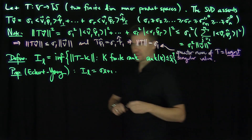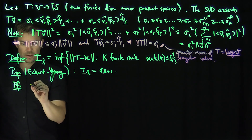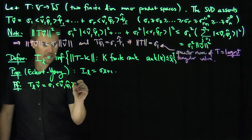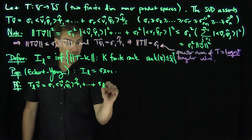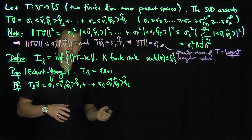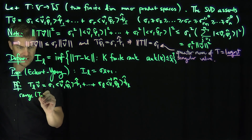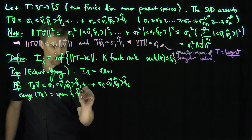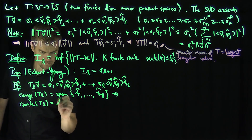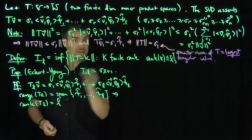Let's prove this. We define a truncated version of the singular value decomposition: T_L(V) = sigma_1 ⟨V, phi_1-hat⟩ psi_1-hat + ... + sigma_L ⟨V, phi_L-hat⟩ psi_L-hat. The range of T_L is the span of psi_1-hat through psi_L-hat, so the rank of T_L equals L. We will plug in K = T_L to obtain one of the two inequalities.